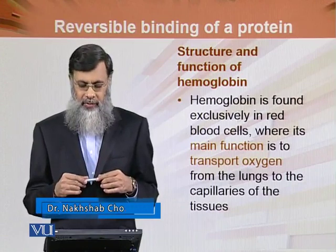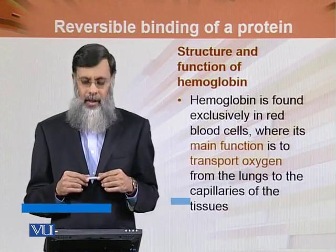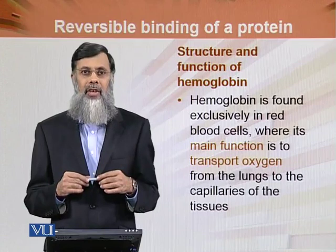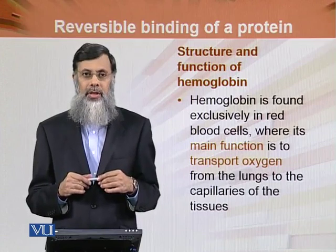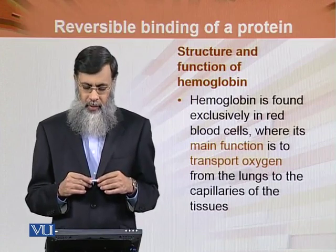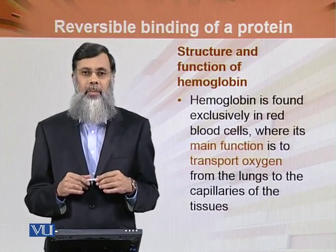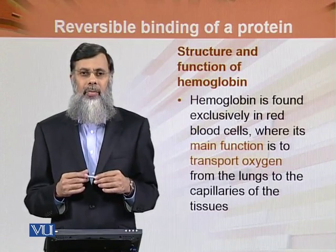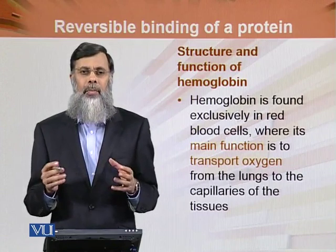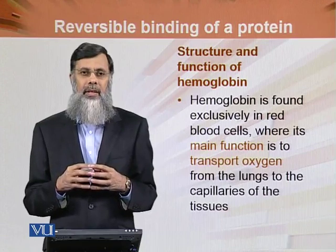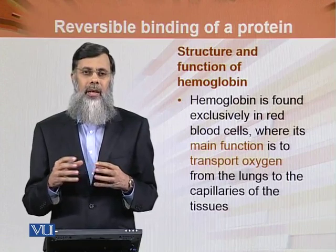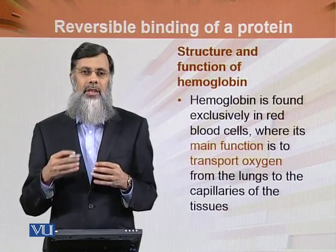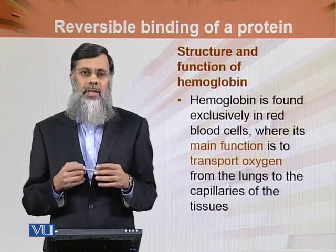Hemoglobin is found exclusively in the red blood cells, where its main function is to transport oxygen from the lungs to the capillaries of the tissue where it is required. Myoglobin is present in the muscles where there is a requirement of oxygen.